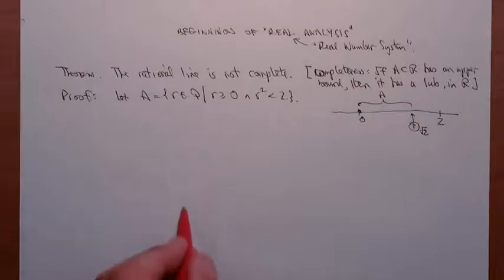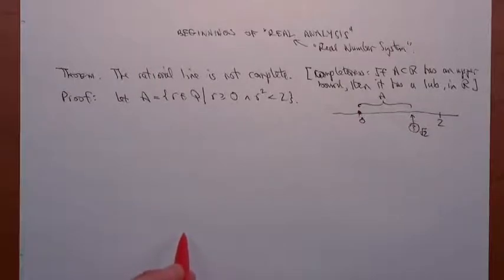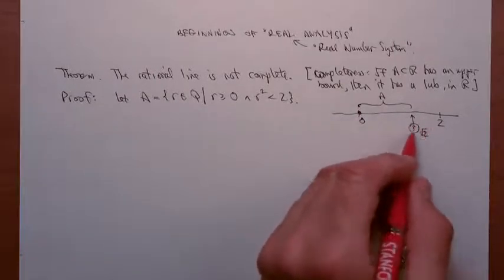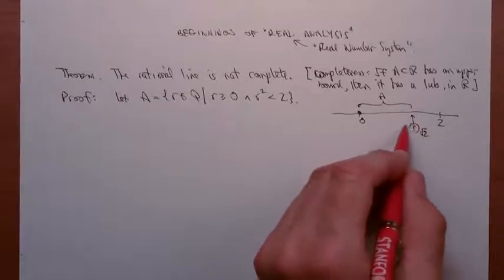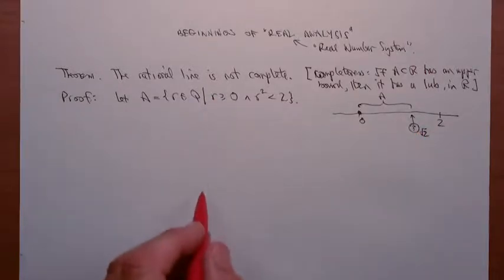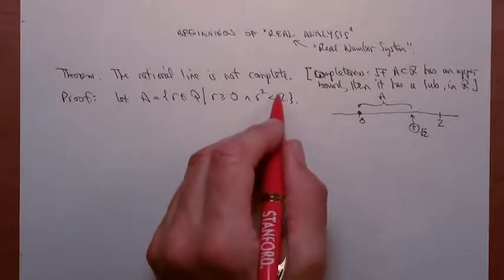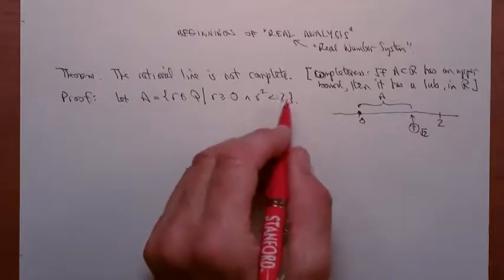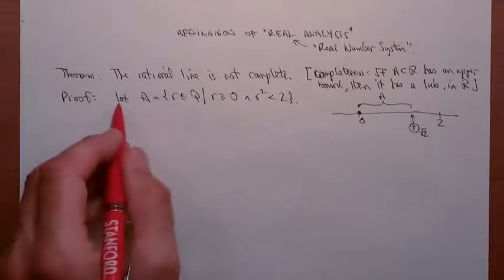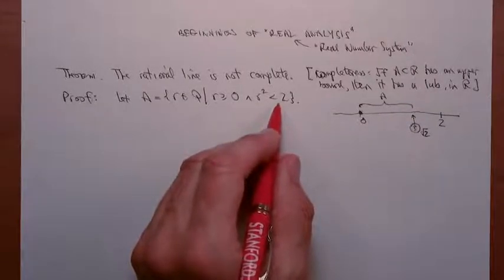I should stress that throughout this argument we're talking purely about the rationals. I'm not going to be talking about any reals — that picture is just to guide our intuition and motivate what's going on. The entire argument is going to be in terms of rational numbers, not real numbers. I deliberately did not write r less than the square root of 2, because there is no such thing as the square root of 2 in the rationals.